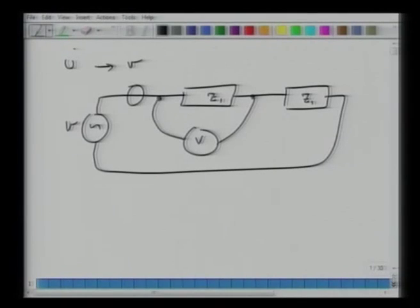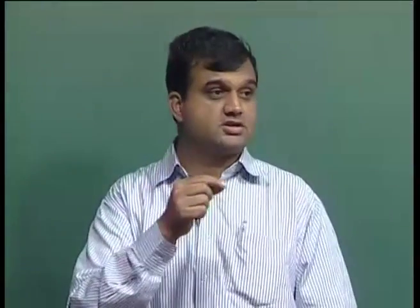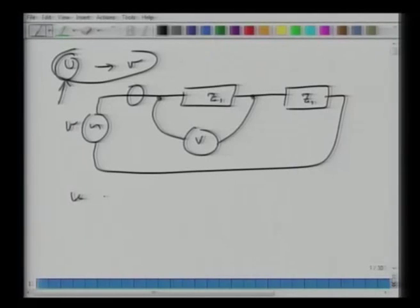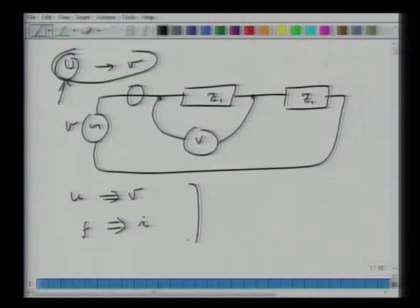Similarly, when I have to measure velocity, I do not have to break the mechanical circuit. If something is moving, I can use a laser or displacement meter to measure the velocity. If I have to measure force, which is analogous to current, I have to again break the circuit, because force passes through the stream of things. This is another benefit of this analogy. This analogy, where we equated U with voltage and force with current, is called the mobility analogy.